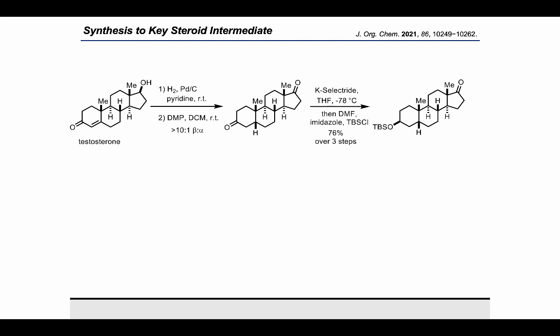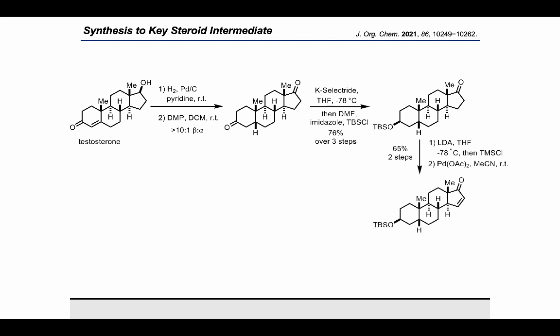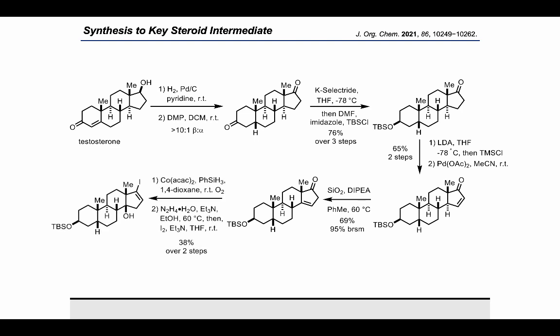This derivative was subjected to D-ring modification by first installing an enone through Segusa-Eto's two-step oxidation in 65% yield. Similar to the model substrate, the deconjugation was accomplished to produce the beta-gamma unsaturated ketone product in 69% yield with 95% BRSM. The beta-C14 hydroxyl group was then installed via Mukaiyama hydration conditions.